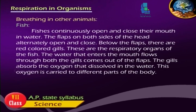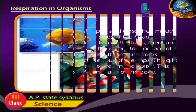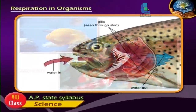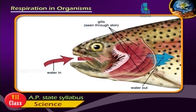Breathing in other animals — Fishes: Fishes continuously open and close their mouths in water. The flaps on both sides of the head alternately open and close. Below the flaps there are red colored gills, which are the respiratory organs of the fish. The water that enters the mouth flows through both the gills and comes out of the flaps. The gills absorb the oxygen dissolved in the water.